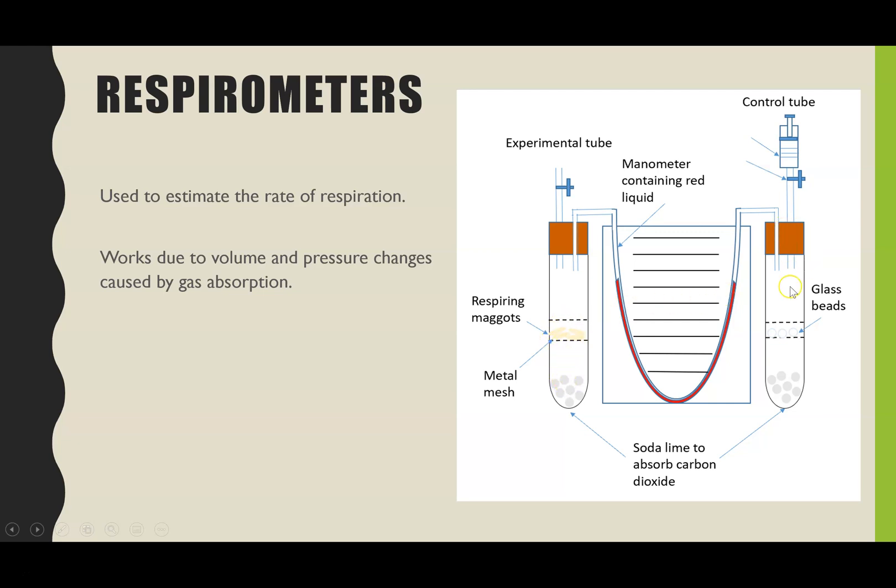Our control tube exactly the same except if we want to prove that it's definitely the organism that is respiring and nothing else causing the changes then we need to put an inert object so we've got glass beads here as an example because they won't be respiring but you'd put the same mass of glass beads in as maggots just to keep everything consistent.